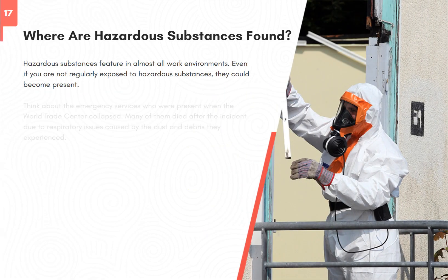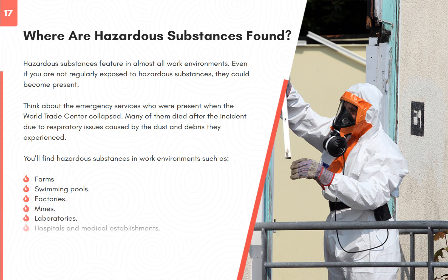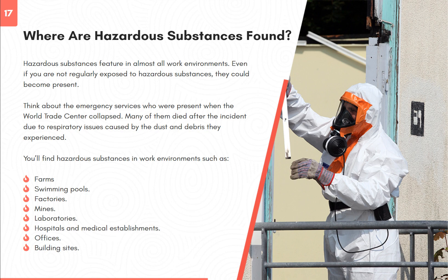Where are hazardous substances found? Hazardous substances feature in almost all work environments. Even if you are not regularly exposed, they could become present — think about the emergency services present when the World Trade Centre collapsed; many of them died after the incident due to respiratory issues caused by the dust and debris. You'll find hazardous substances in work environments such as farms, swimming pools, factories, mines, laboratories, hospitals and medical establishments, offices, and building sites.